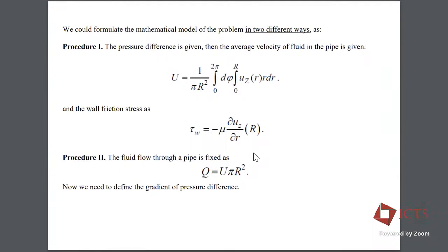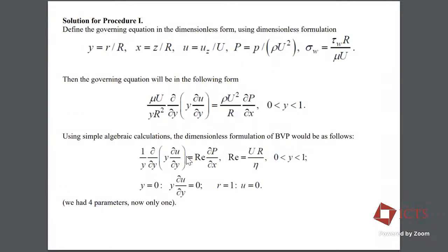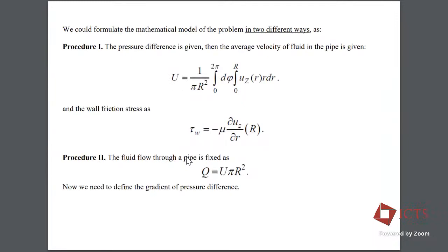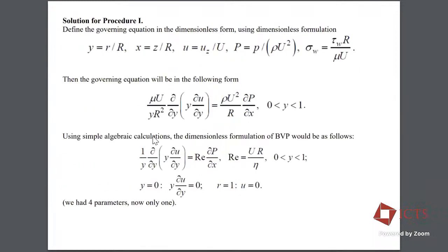This is the first procedure. In the second procedure, the fluid which flows through the pipe is fixed as a quantity proportional to the squared external radius. Now in the second procedure, I define the gradient of pressure difference. To remind you: the first procedure has average velocity U-big and wall friction stress. Now we define the governing equation in dimensionless form using dimensionless formulation.